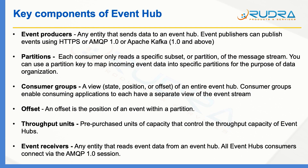First is Event Producers. Any entity that sends data to an Event Hub is an Event Producer, also called an Event Publisher. Event Publishers can publish events using HTTPS, AMQP 1.0, or Apache Kafka 1.0 and above.